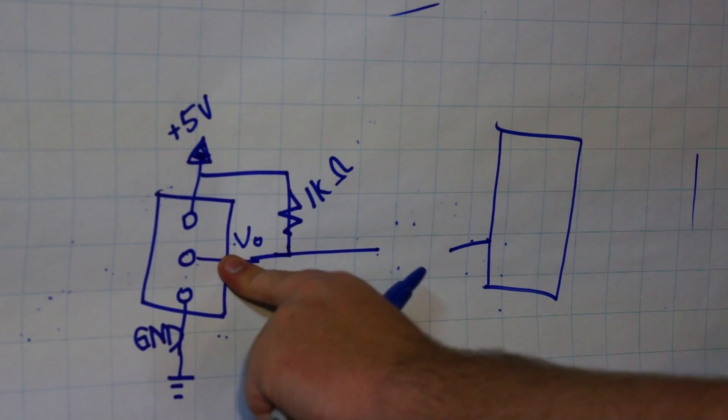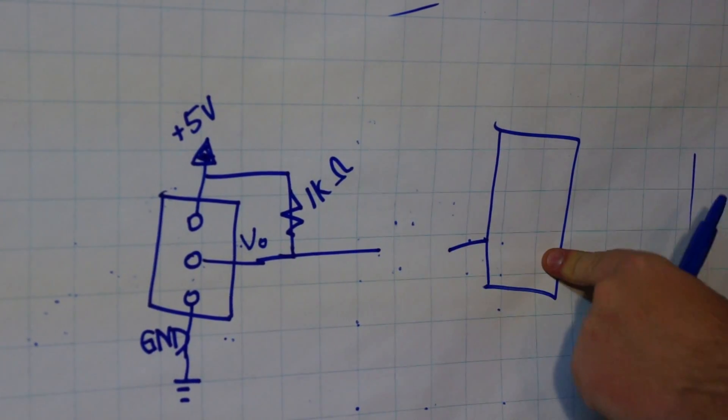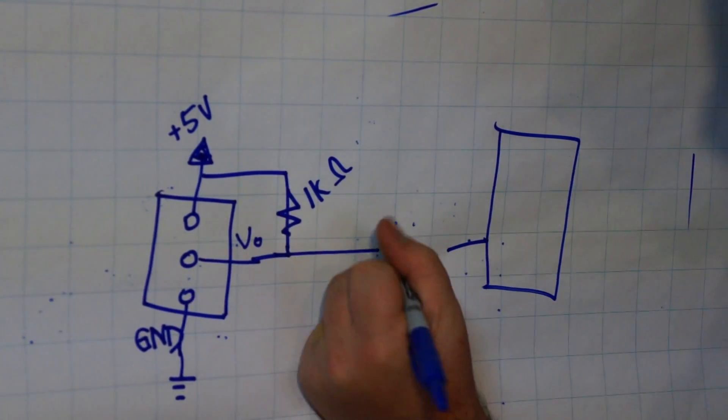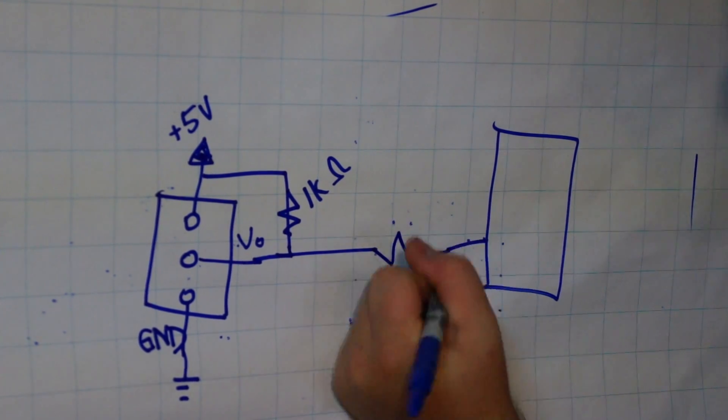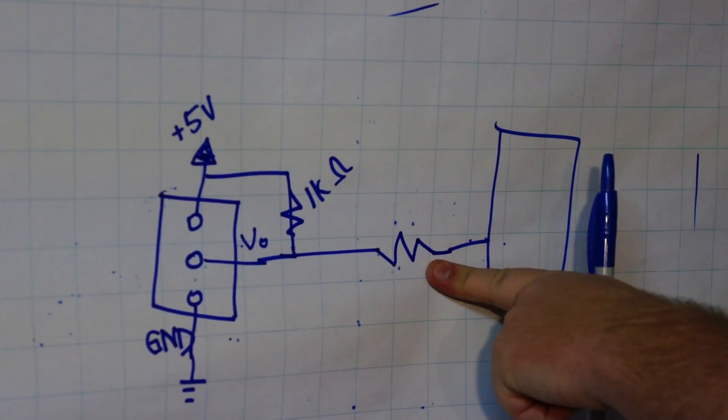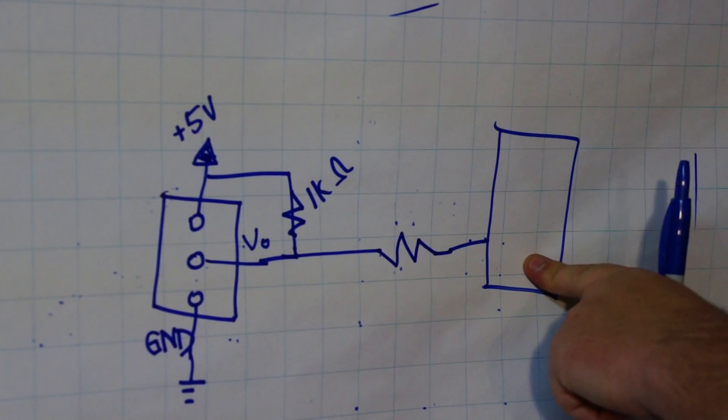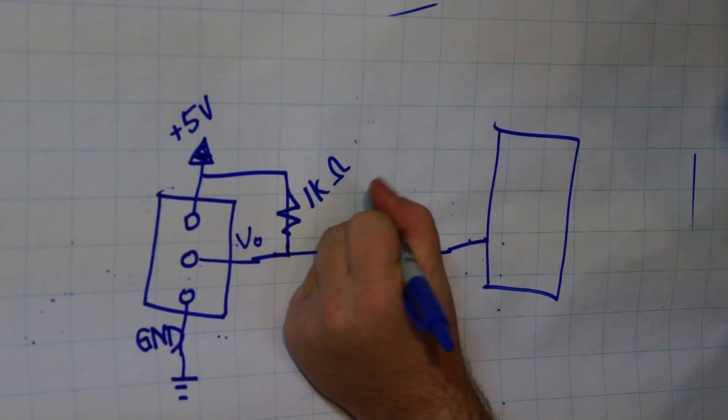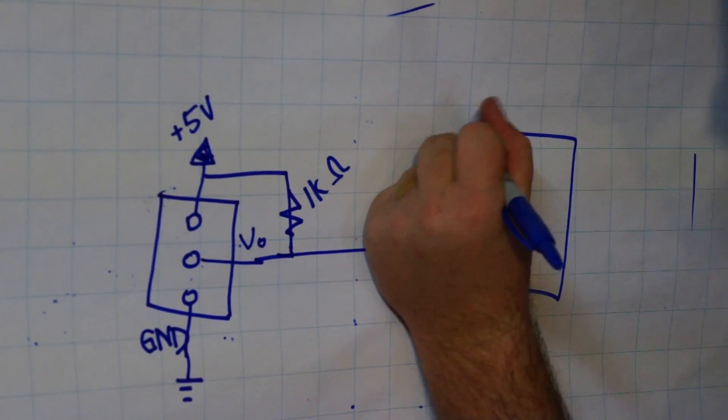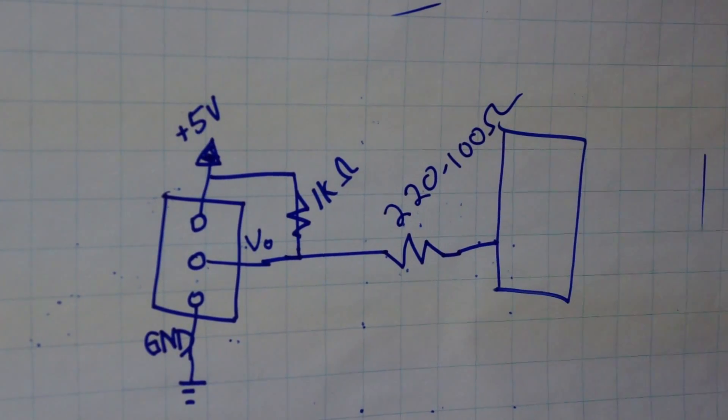So, to prevent current from flowing all the way through and ruining your microcontroller, you're probably going to want to put a low resistance resistor here to protect your microcontroller. About 220 to 100 ohms usually works pretty well.